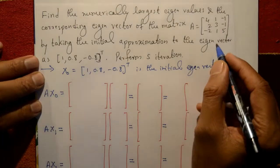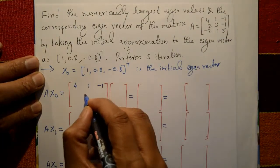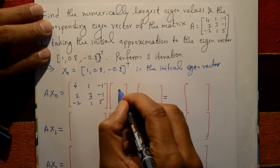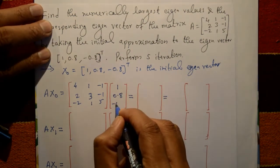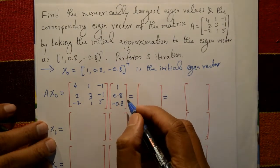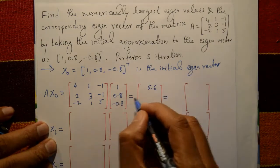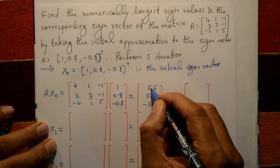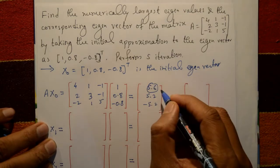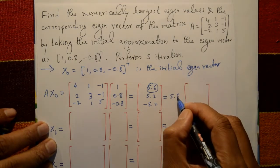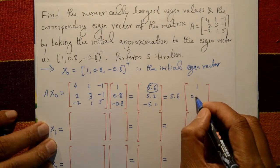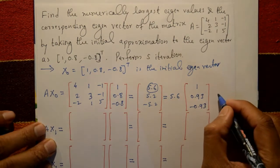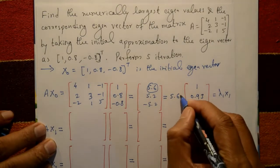Now compute A·x0. Matrix A is [4, 1, -1; 2, 3, -1; -2, 1, 5] multiplied by x0 = [1, 0.8, -0.8]ᵀ. The first row gives 5.6, second row 5.2, third row -5.2. The largest element is 5.6, so take it as a common factor outside. Inside we get [1, 0.93, -0.93]ᵀ. This technique is called normalization. This gives λ1 = 5.6 and x1 = [1, 0.93, -0.93]ᵀ.